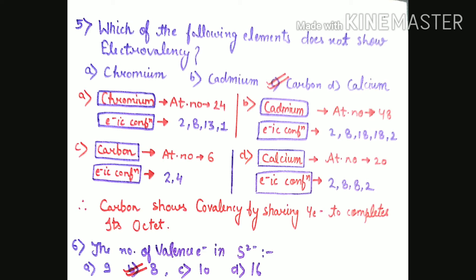Let's check chromium first. Chromium's atomic number is 24, electronic configuration is 2,8,13,1. Cadmium is 48. Carbon's electronic configuration is 2,4. Calcium is 2,8,8,2. In chromium, one electron will gain to complete its duplet, so it shows electrovalency.